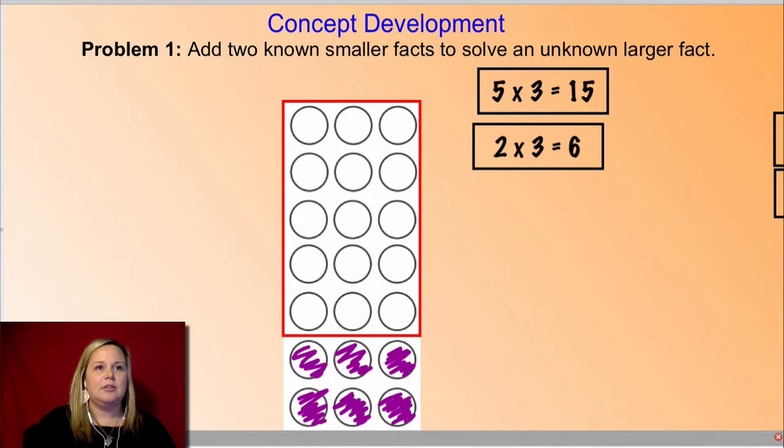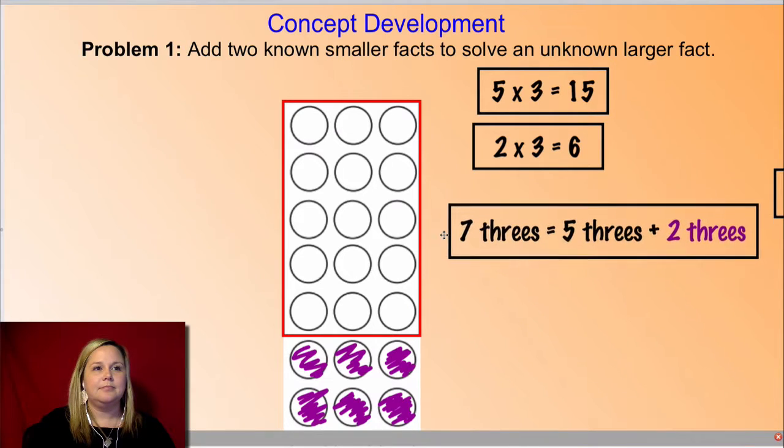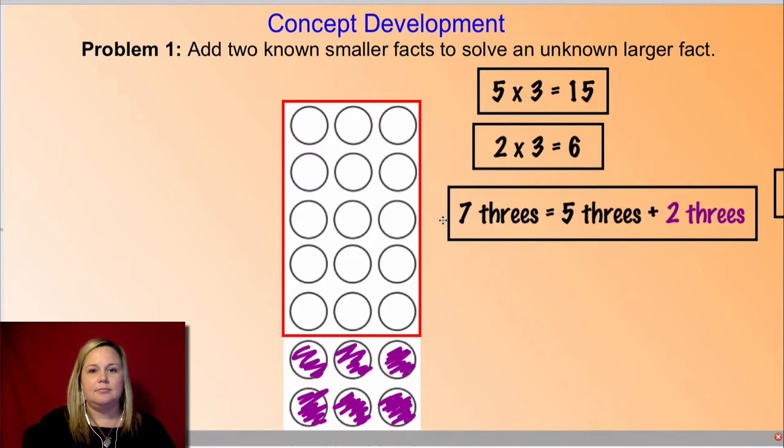So now let's take a look at this. I have seven threes all together: one, two, three, four, five, six, seven. That's why I came up with this seven threes equals five threes that I came up with up here and two threes. So if I were to add my five threes that are in the red and my two threes that are in this purple shaded area, I would end up with seven threes.